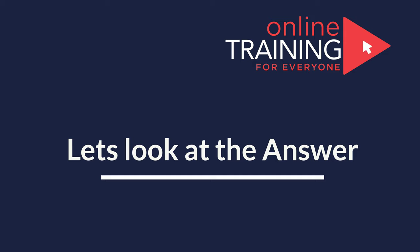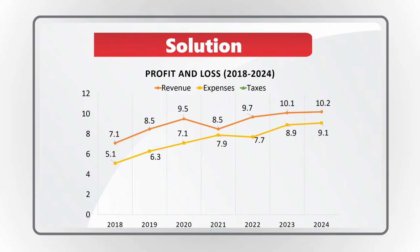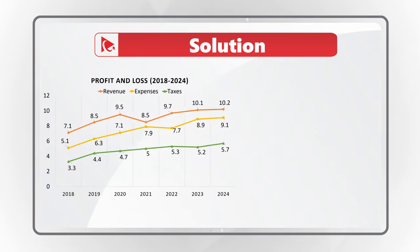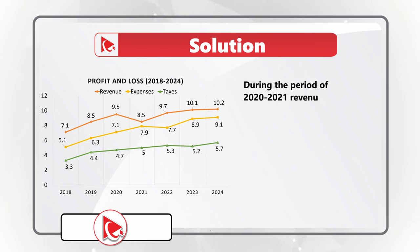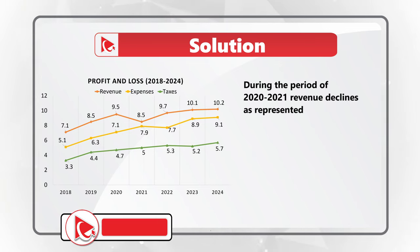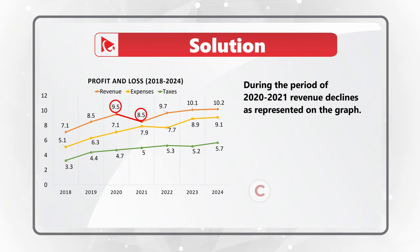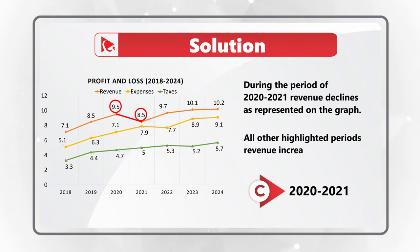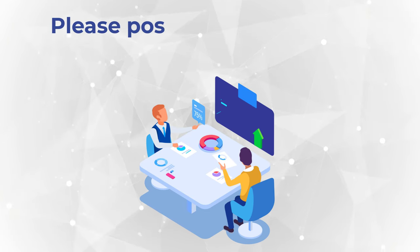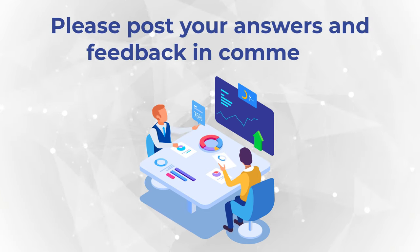The revenue goes down between 2020 and 2021, represented by the blue line. In 2020 revenue was about 9.5 units and in 2021 it went down to approximately 8.5 units. All other highlighted periods indicate revenue increases. So the correct answer is choice C, the period between 2020 and 2021. Did you see it differently? Post your answer in comments.